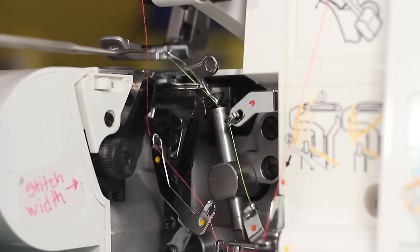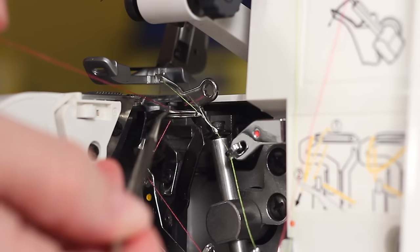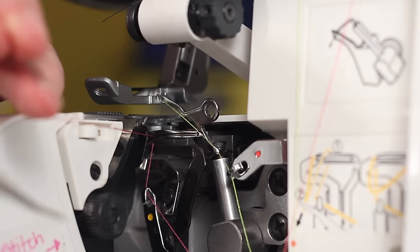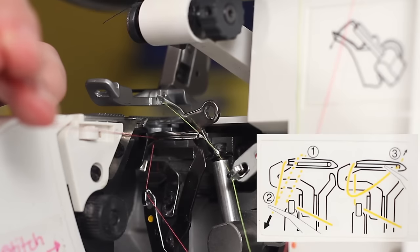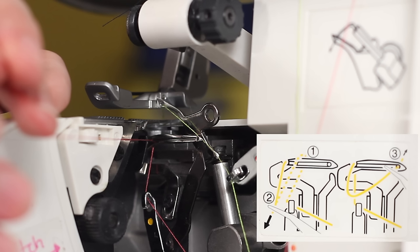Now's the hard part. Threading the lower looper needle. Pass the thread behind the lower looper needle, and then hook it on to the little cutout. It's very hard to see because it's almost like hidden inside the machine. And this diagram kind of helps you visualize it. This part is the trickiest. If you can get through this part, then the rest is easy.